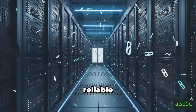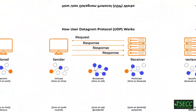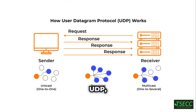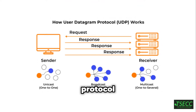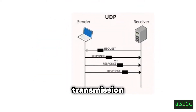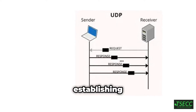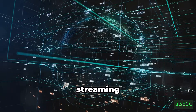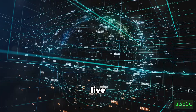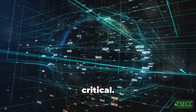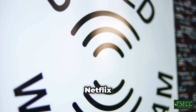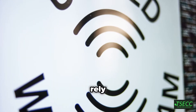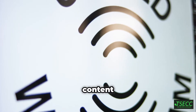User Datagram Protocol, or UDP, is a connectionless protocol that enables fast data transmission without establishing a connection. It's used for real-time applications like streaming media and live broadcasts where speed is critical. Services like Netflix and Twitch rely on UDP to stream video content quickly to users, even if some data packets are lost along the way.